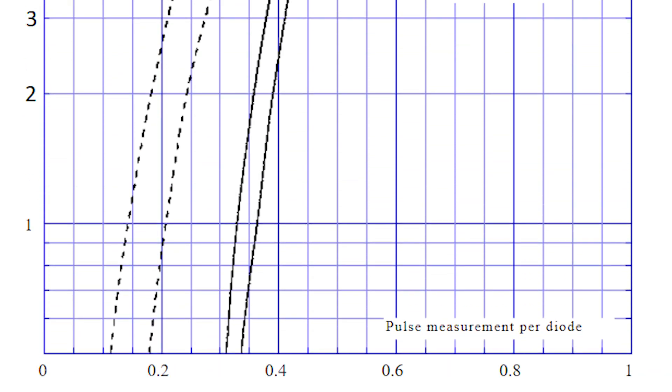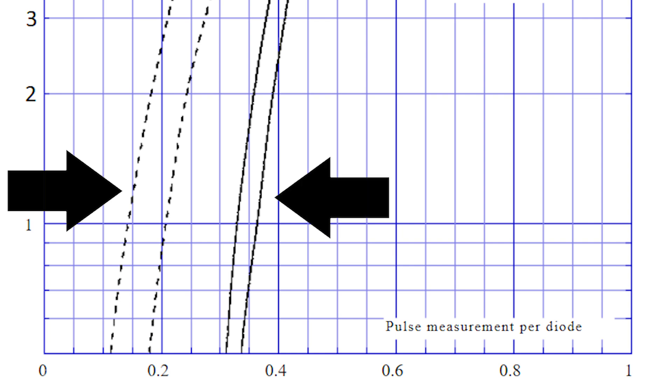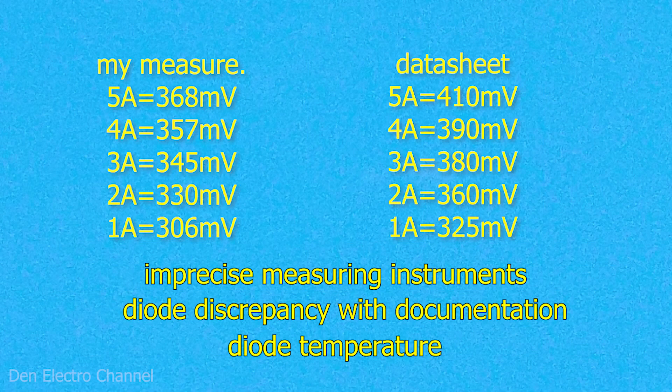Please note the graph. At a temperature of 150 degrees, the voltage drop across the diodes is almost two times less than at a temperature of 25 degrees. When current is passed through the diode, it naturally begins to heat up, even if it is on a radiator. Because of this, measurements may differ even with precise measuring instruments.